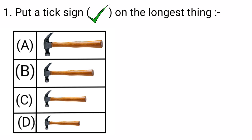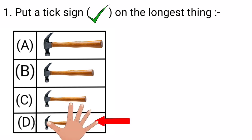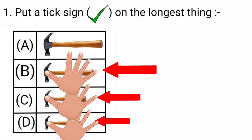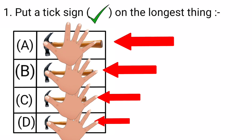On observing them, it's clear that hammer D is the smallest, hammer C is longer than D, hammer B is longer than C and D, and hammer A is the longest. So the correct answer is option A — we'll put a tick sign on it.